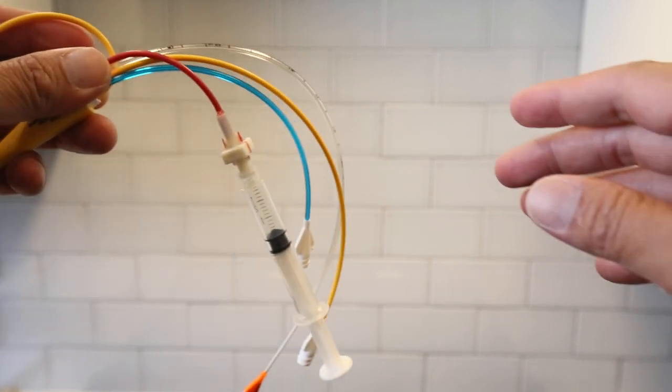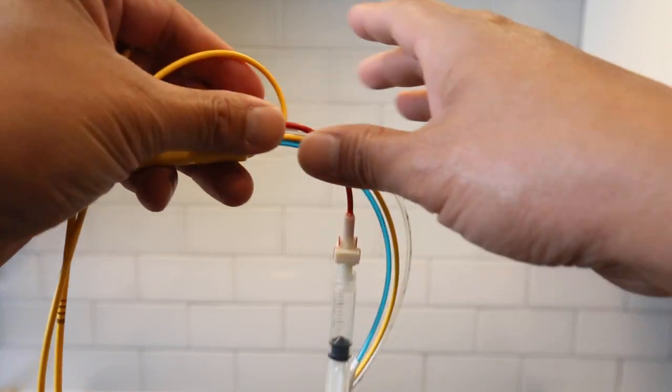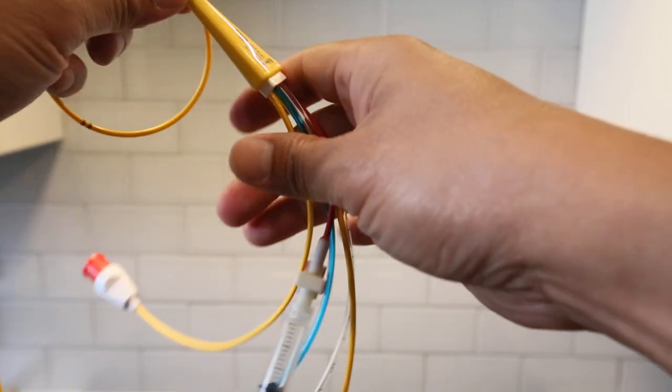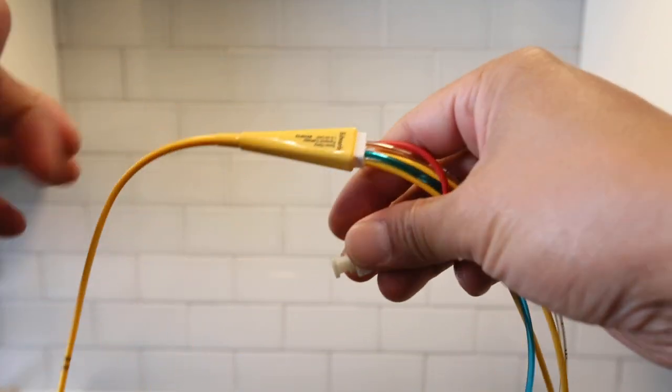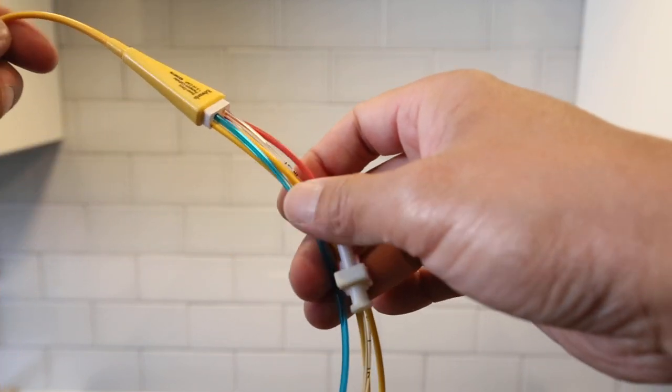All right, so here is a Swan-Ganz catheter. As you can see, it doesn't have this syringe yet, but the hub is right there near the shortest part.